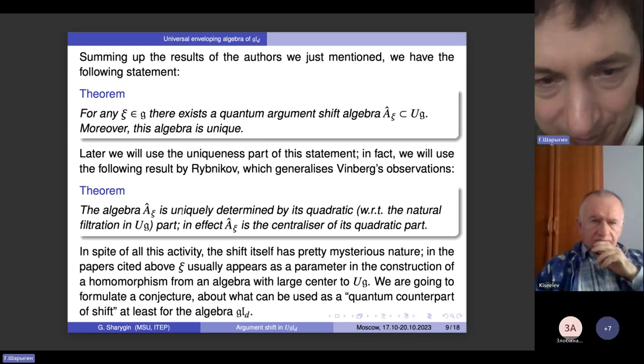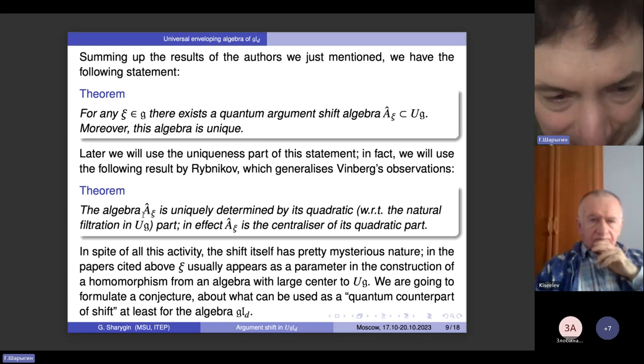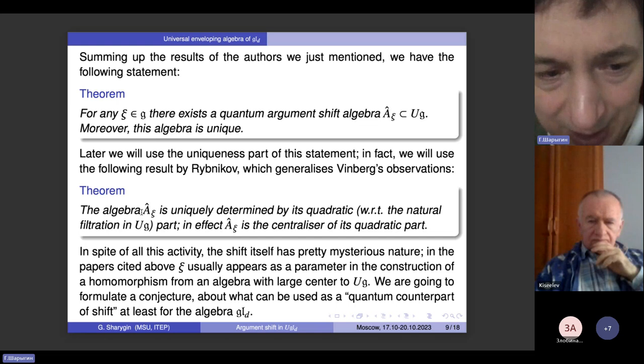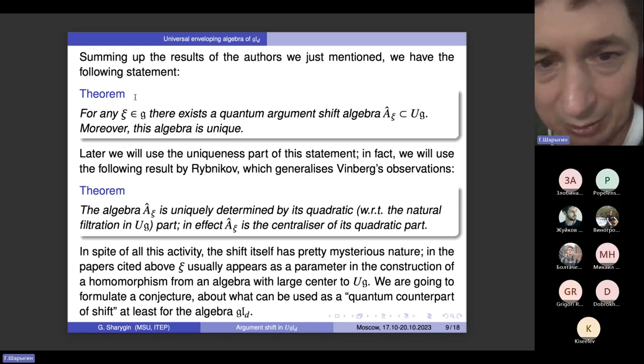So I'm going to talk about this shifting operator, not just about the way you obtain the algebra, but rather the way you can obtain the operator which generates this algebra. To this end, I will need the following theorem by Rybnikov, which says that the algebra A hat psi, which exists according to the results I cited by Rybnikov, by Molev, by Tarasov and others, this algebra A hat psi in universal enveloping algebra exists and is uniquely determined by its quadratic part. In effect, this algebra is always equal to the centralizer of its quadratic part.